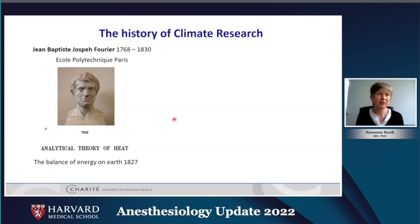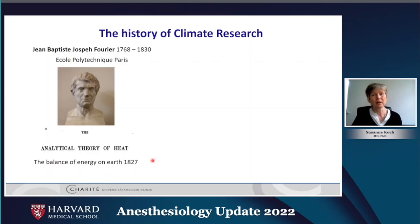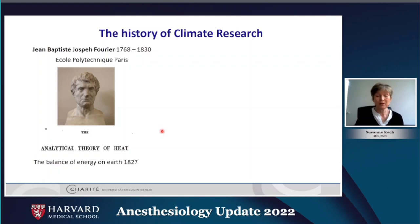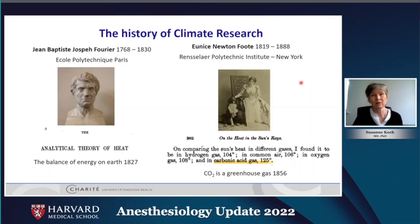The history of climate research started back in 1827 with Jean-Baptiste Fourier, a mathematician from Paris, who questioned the balance of energy on earth and calculated that we should have a greenhouse aspect on earth. And in 1856, Eunice Newton-Foote, a great granddaughter of Newton, found out that carbon dioxide is a gas which will heat up the atmosphere — she was the first to state that CO2 is a greenhouse gas.